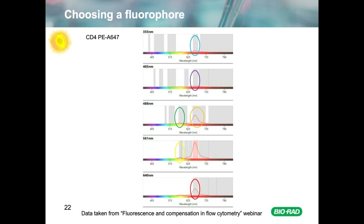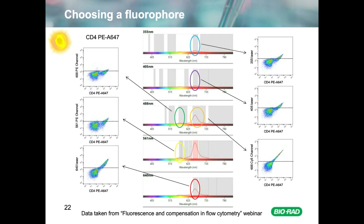We then stained human peripheral blood with CD4 PE-Alexa 647. The dot plots shown — PE-Alexa 647 on the x-axis plotted against other channels on the y-axis — show the actual amount of cross-laser excitation and the resulting unwanted fluorescence in other channels before compensation has been applied. Fluorescence spillover and cross-laser excitation will be a potential problem if you intend to use these filter sets to collect fluorescence from other fluorophores, and compensation will need to be applied.